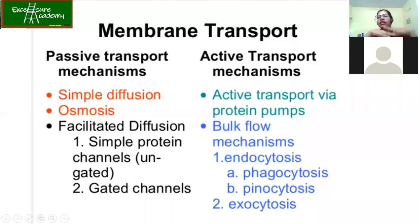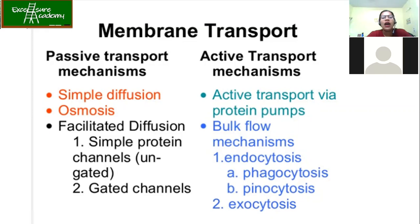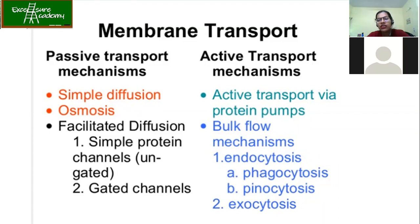In membrane transport there are two types: passive transport and active transport. The main difference is the utilization of energy in the form of ATP. Passive transport does not require ATP or energy, whereas active transport does. Passive transport operates based on the concentration gradient — molecules move from higher to lower concentration, i.e., down the concentration gradient. Active transport can move molecules against the concentration gradient and therefore requires ATP.